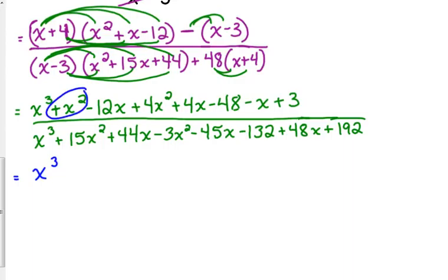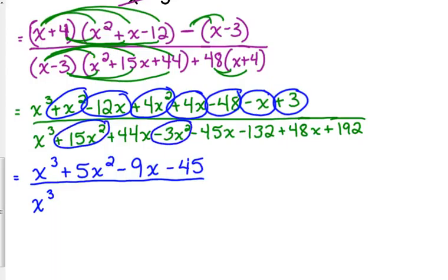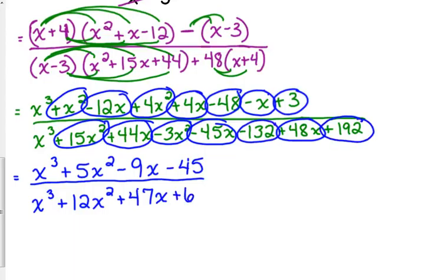Let's combine like terms. x squared plus 4x squared, so plus 5x squared. Minus 12x plus 4x is minus 8x plus another negative x, so minus 9x minus 45. Denominator. x cubed. 15x squared minus 3x squared is 12x squared. Plus 44x minus 45x, that's negative x. Plus 48x plus 47x. And negative 132 plus 192 plus 60.